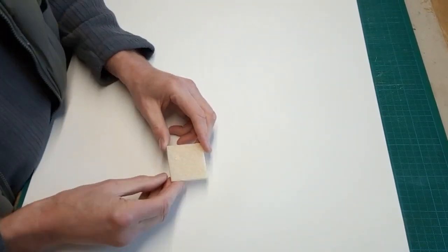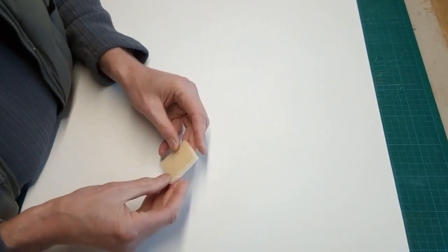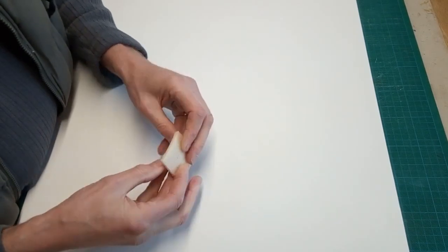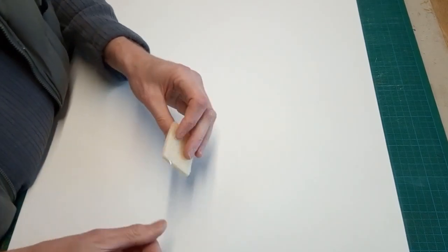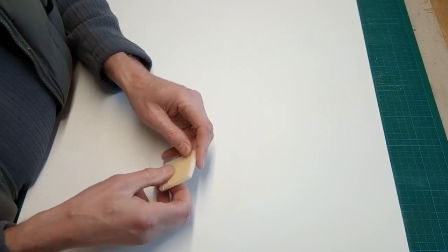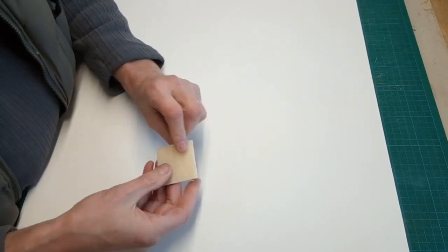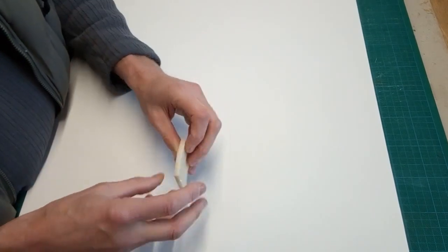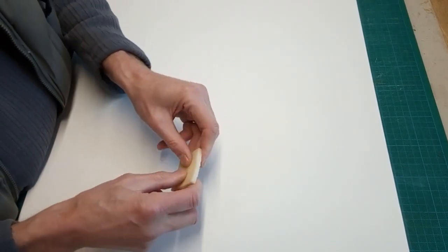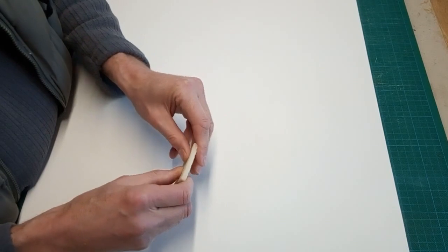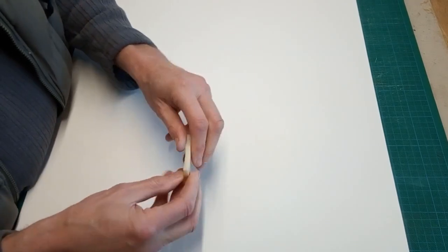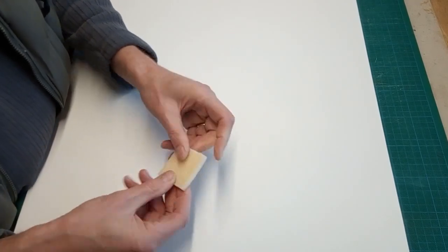You start off with a crepe rubber. Crepe rubber is available from bookbinding suppliers and is used to help lift glue and things like that from cloth bindings. It has a variety of uses, but it's quite hard actually—quite a stiff, open structure, plasticky rubber.